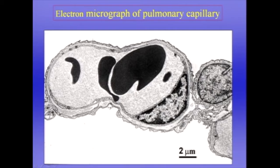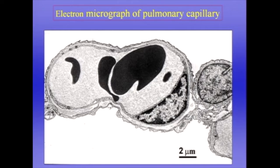Let's look at the thin side first. The outermost layer is the alveolar epithelium — a very, very thin cell, as you can see — and here is the nucleus of what's called the type 1 alveolar epithelial cell. Then the innermost layer is the capillary endothelium, and here is the nucleus of the capillary endothelial cell in this beautiful electron micrograph. Between the two layers is the extracellular matrix, or the interstitium, and on the thin side the extracellular matrix is made up of the fusion of the basement membranes of the alveolar epithelium and the capillary endothelium.